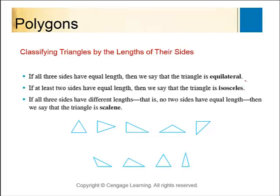For classifying triangles by sides: if all three sides have the same length, it's equilateral. Isosceles means at least two sides have equal length — so by default, an equilateral triangle is also isosceles because at least two of those sides are the same. Scalene means all sides are different lengths.